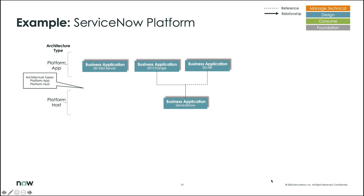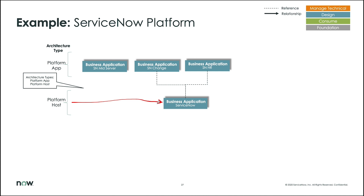The first thing I wanted to discuss is that we have two different types of applications described here. There's an architecture type attribute for the business application, which describes the kind of business application it is. In the case of a platform host or platform application, there is a specific dependency relationship that we capture between the two. Most large organizations have a strategy to establish a platform architecture versus having a lot of independent applications, and this allows you to better understand how you're migrating individual applications onto platform applications to support a platform strategy.